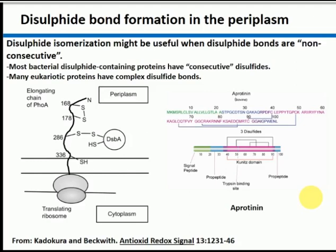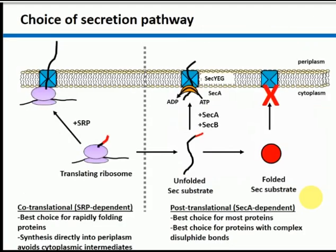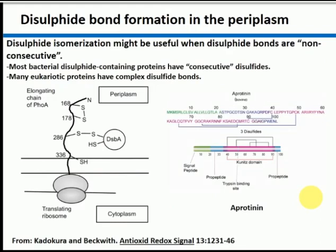So depending on the pathway by which you export proteins — post-translational or co-translational — that can affect whether you get disulfide bonds between consecutive cysteines or non-consecutive cysteines. If you export proteins by the co-translational pathway, you'll preferentially get disulfide bonds between cysteines one and two.